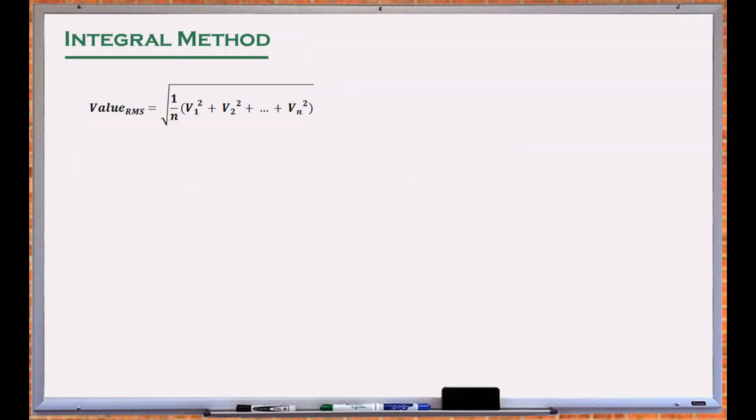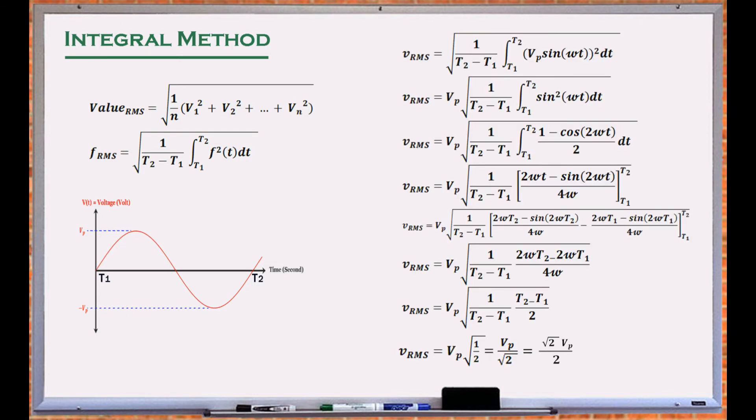Mathematically, the RMS formula describes the equation to find the RMS value of n distinct quantities. For a function continuously defined over the period between t1 and t2, the formula changes to its integral form. Applying trigonometric identities and simplifying the equation results in the same RMS value for the sine wave as in the previous step. This analysis can be applied to other continuous functions.